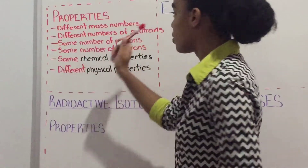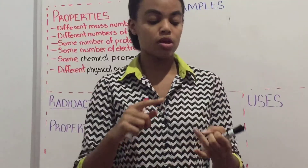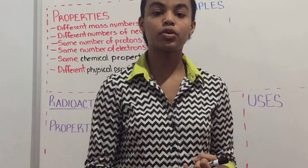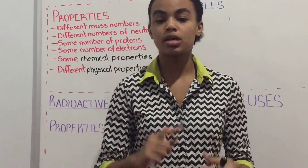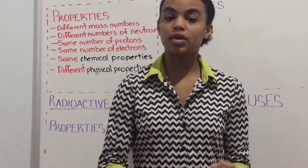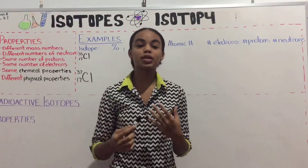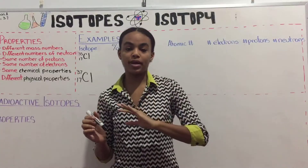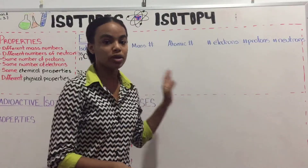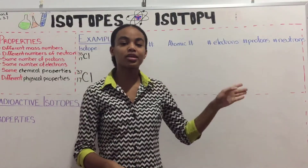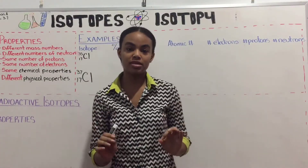So just to recap, the properties of isotopes include: different numbers of neutrons in the nucleus, which gives rise to different mass numbers; same atomic number; same number of protons; same number of electrons; same chemical properties; but different physical properties. The example of isotopes we're going to look at today is chlorine — specifically chlorine-35 and chlorine-37. We'll examine percentage abundance, number of electrons, mass number, number of protons, and number of neutrons for each.